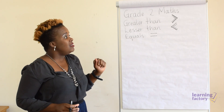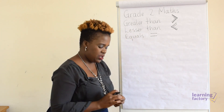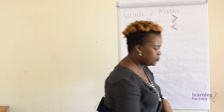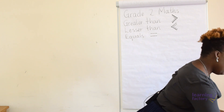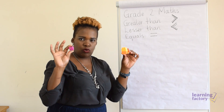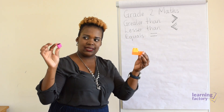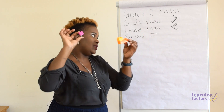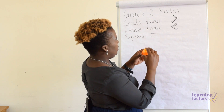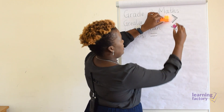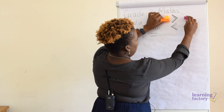Now let's practice with our signs. I have my sharpener and these building blocks. Which one is greater and which one is lesser? The bigger one is greater and the smaller one is lesser. The blocks are greater than the sharpener — can you see the crocodile eating the blocks?